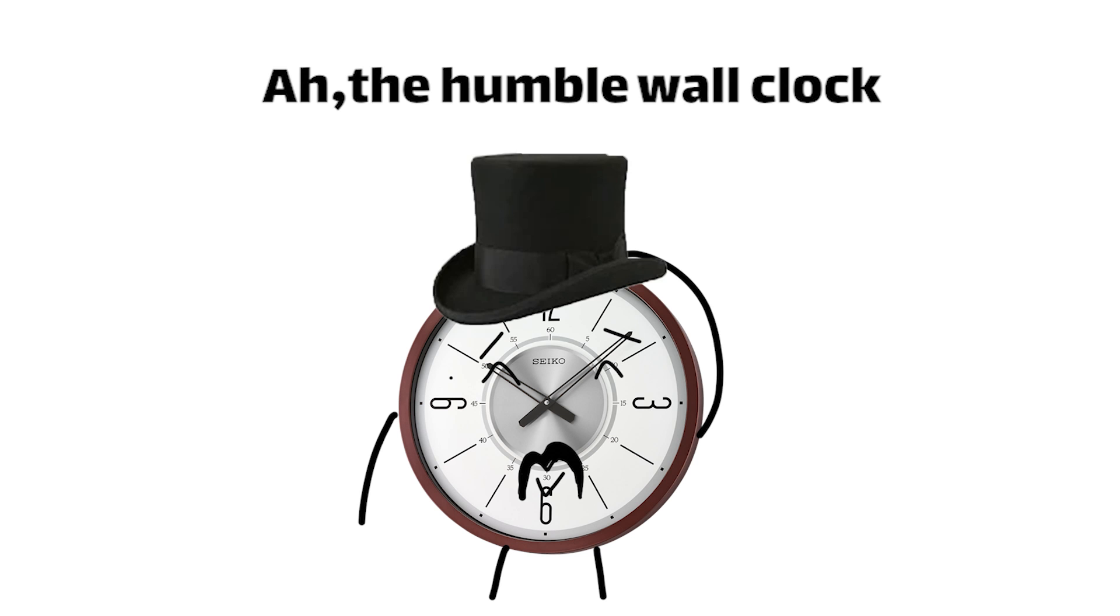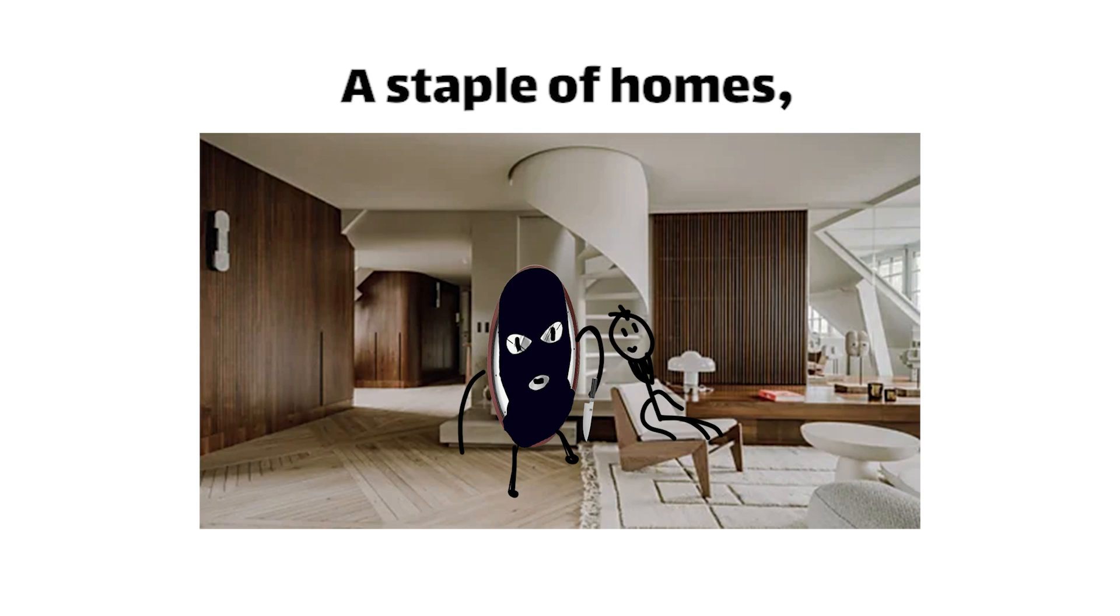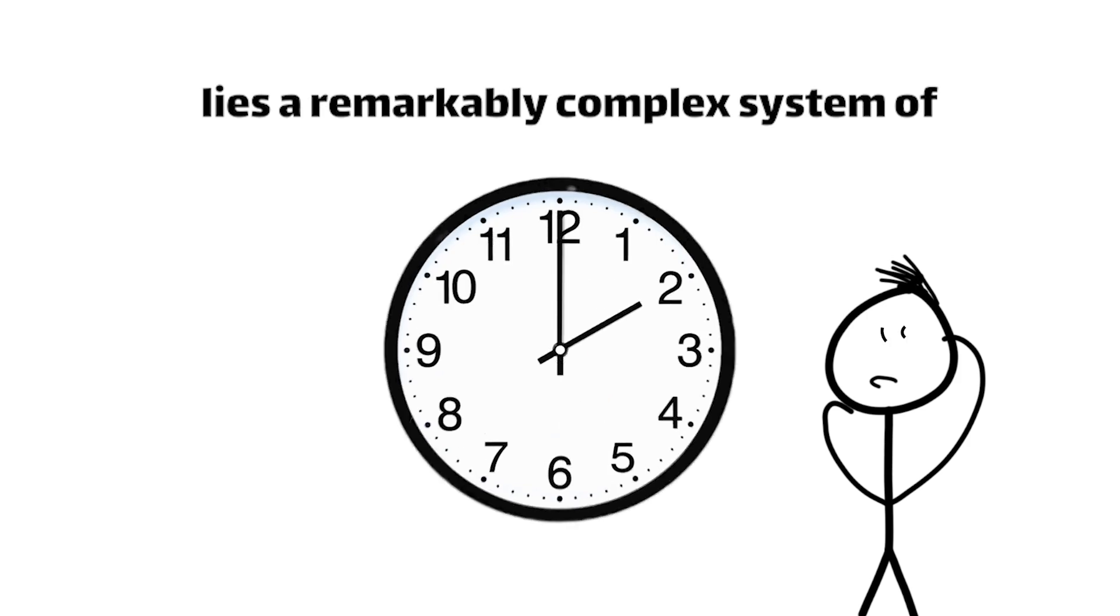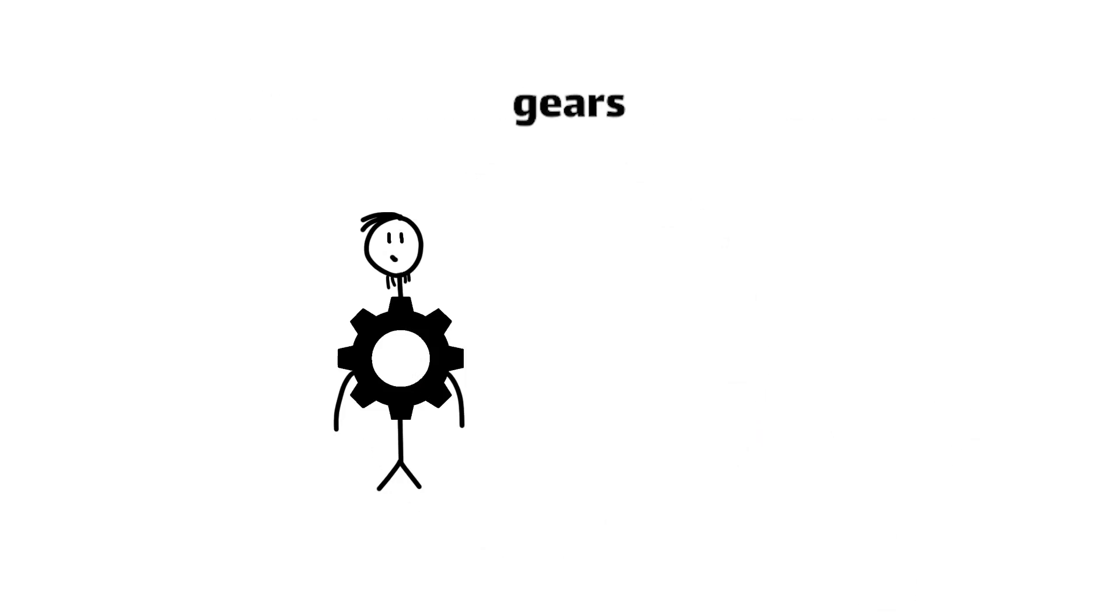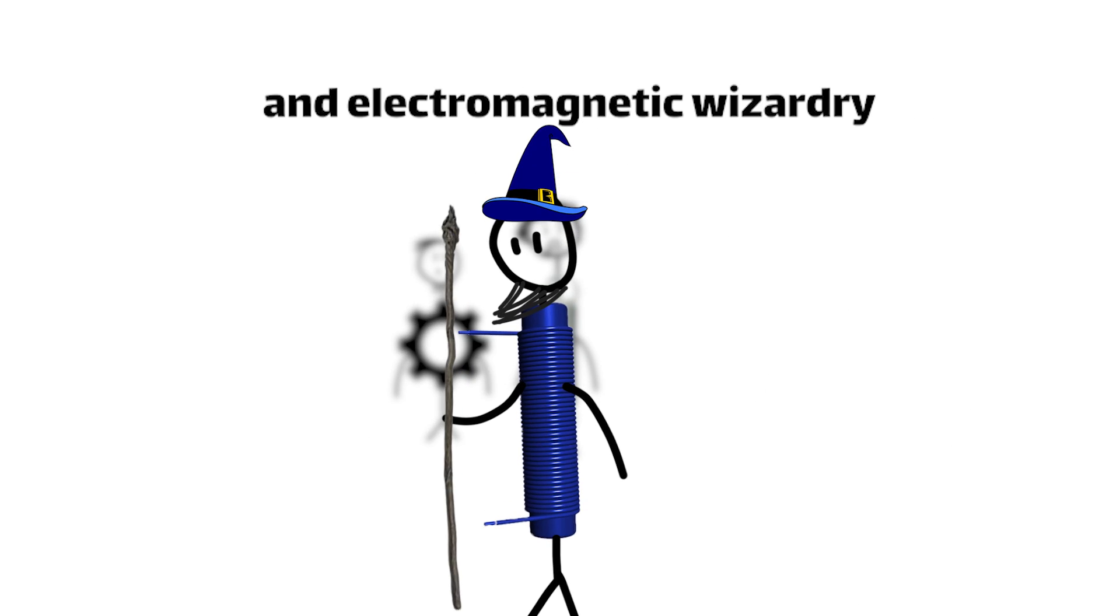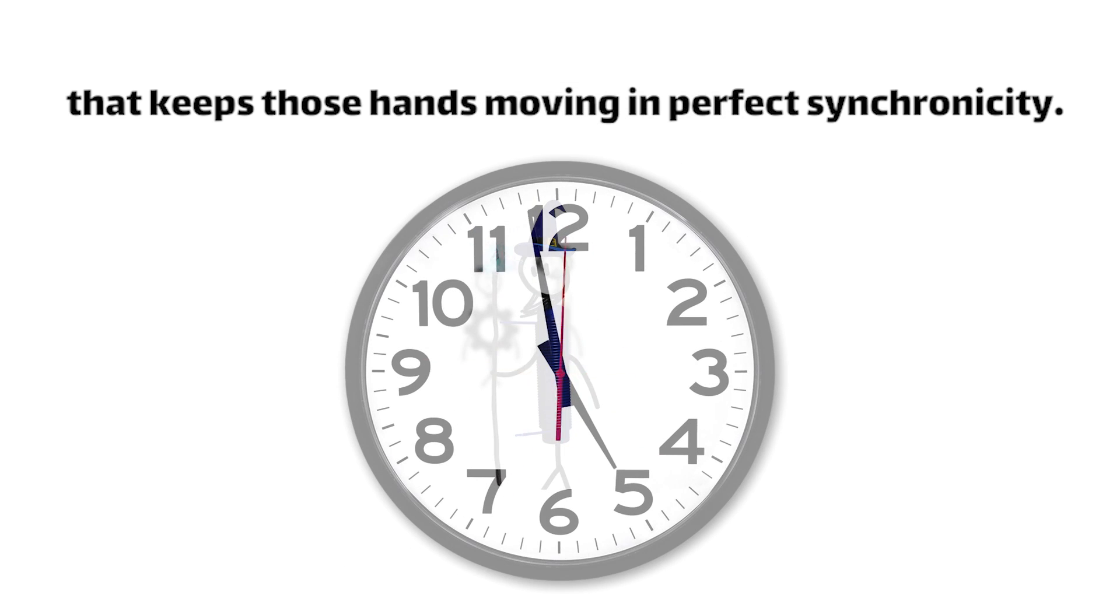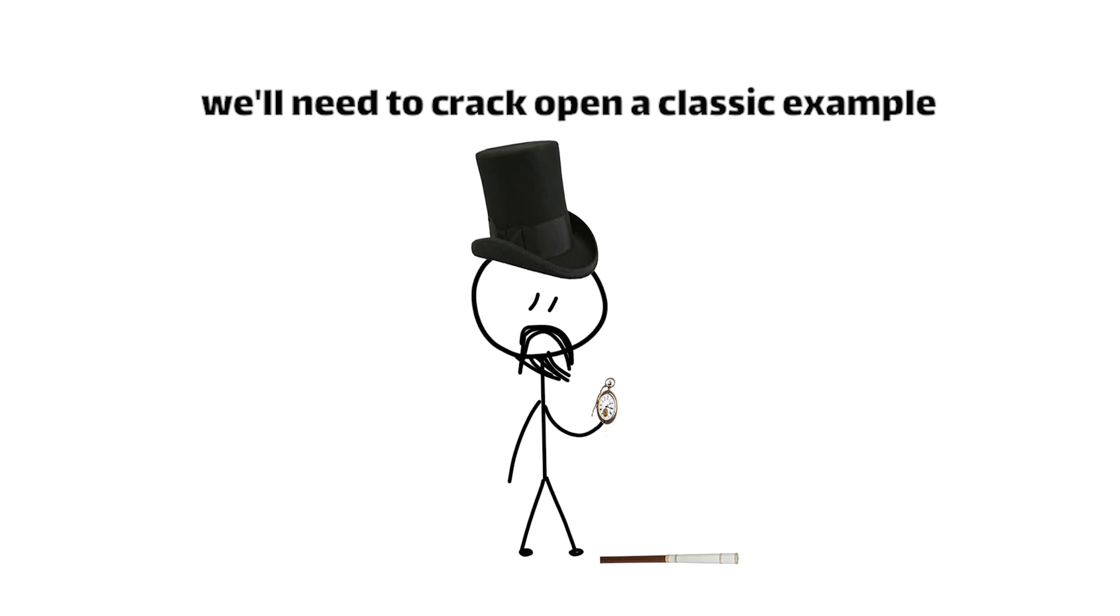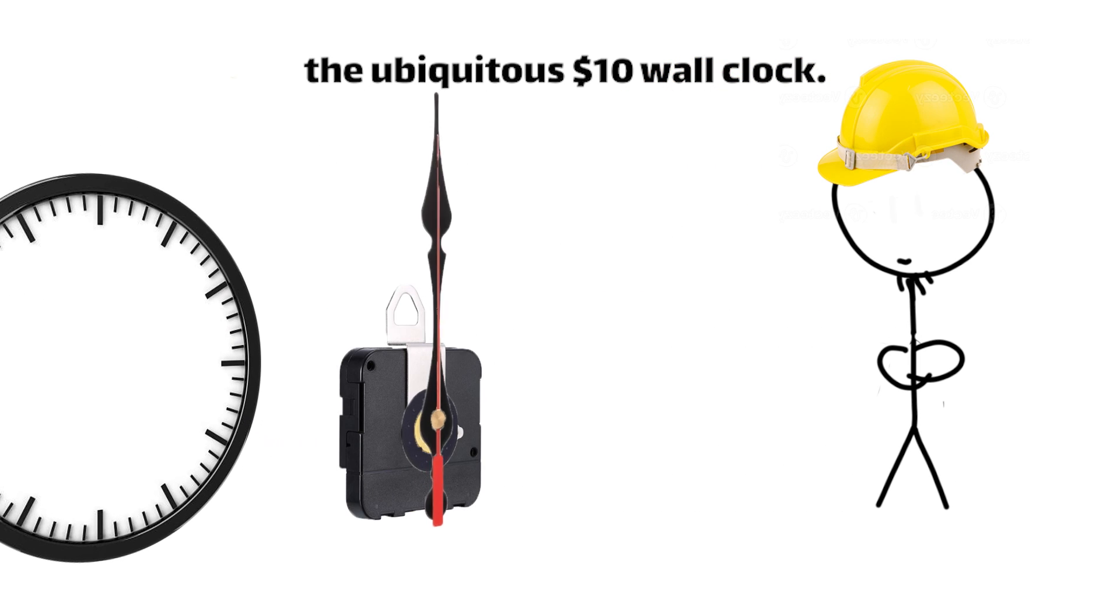Ah, the humble wall clock. A staple of homes, offices, and classrooms around the world. But beneath that simple exterior lies a remarkably complex system of gears, springs, and electromagnetic wizardry that keeps those hands moving in perfect synchronicity. To unravel the mysteries of the analog clock, we'll need to crack open a classic example, the ubiquitous $10 wall clock.